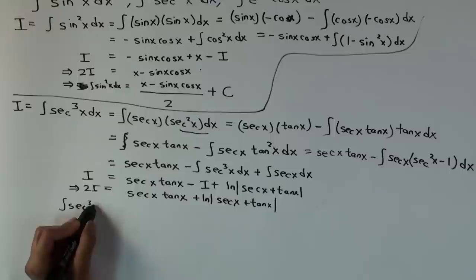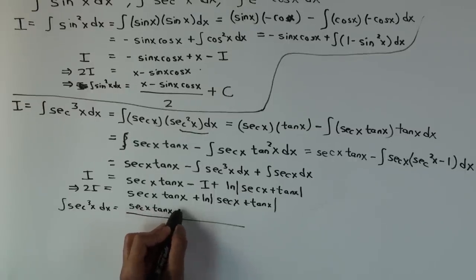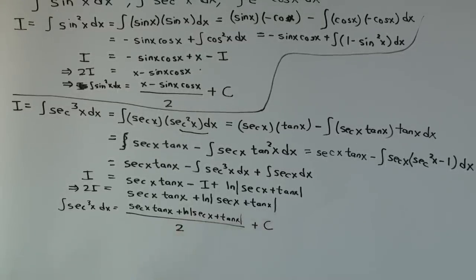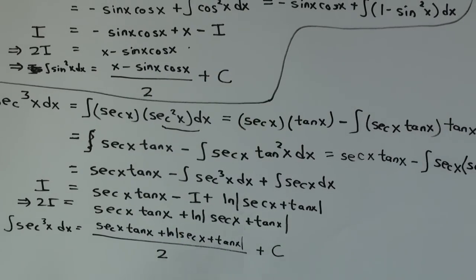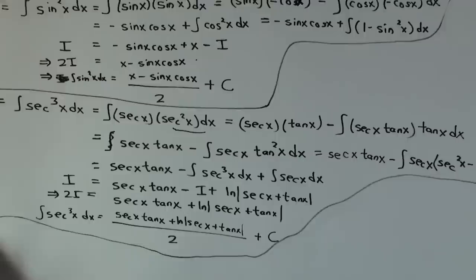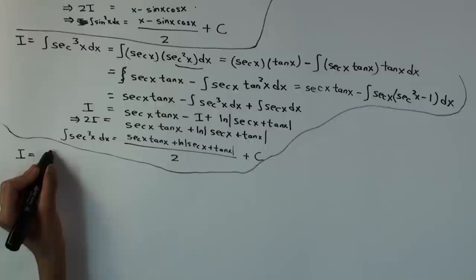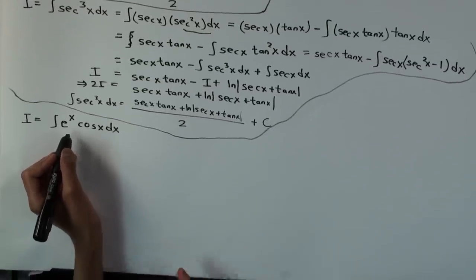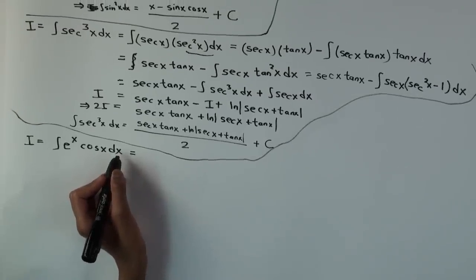So the integral of sec³(x) equals one half times [sec(x)tan(x) + ln|sec(x) + tan(x)|] plus C. Now let's look at the third example: the integral of eˣ·cos(x). It's up to you which one you take to differentiate and which to integrate, but you must be consistent. I'll take eˣ as the part to integrate throughout — the exponential is always the one to integrate.